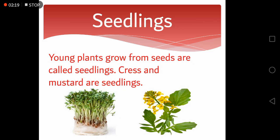Coming towards the last example — seedlings. Young plants that grow from seeds are called seedlings. Cress and mustard are seedlings. These plants are eaten in their very young form as a vegetable.